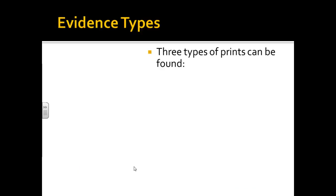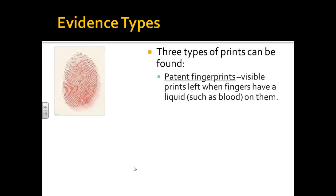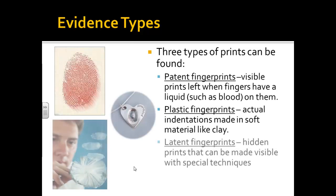There are three types of prints. Patent prints are visible — flat-out visible. When we ink our fingers and leave prints in class tomorrow, those are patent prints. A bloody handprint left on a wall would also be a patent print. Plastic prints are indented in something such as clay, mud, or dough — like pressing a finger into cooking dough. A latent print is one you have to do something to really see. You might see smudges but can't see any details until you use powder or some other material.